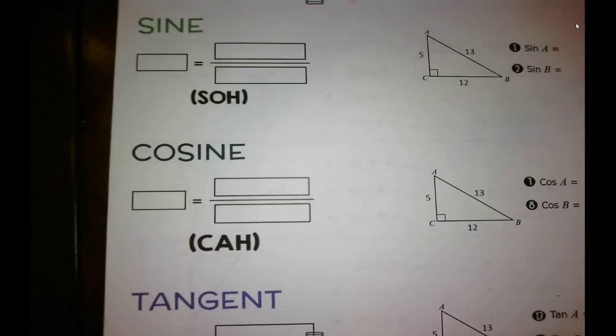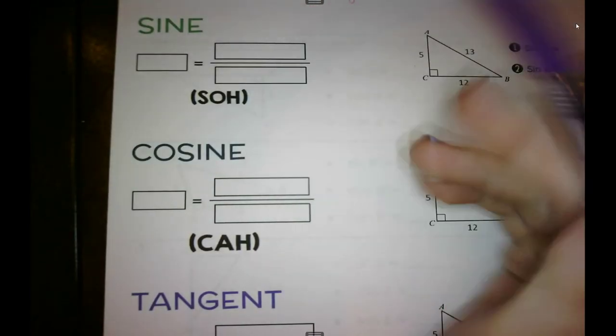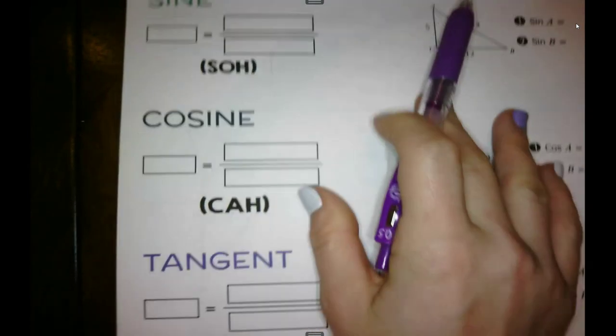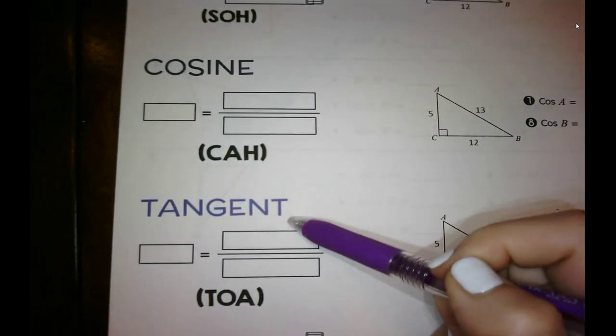So we've got three trigonometry functions: sine, cosine, and tangent.